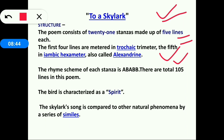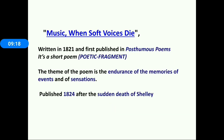In To a Skylark, the bird is characterized as a spirit bird who flies in the air, and in the same way the human spirit can fly anywhere. The skylark's song is compared to other natural phenomena through a series of similes — the poet compares the skylark with many things including the poet's own songs and nature.